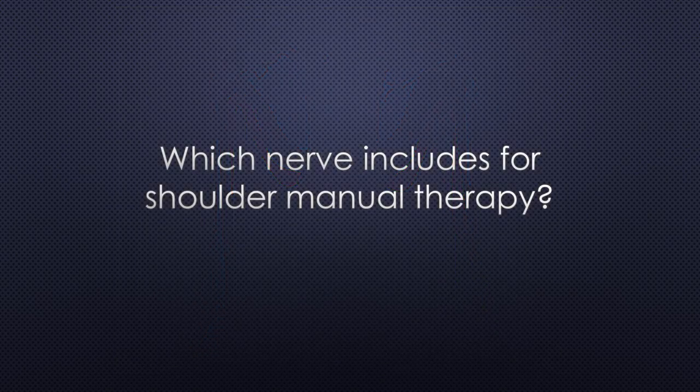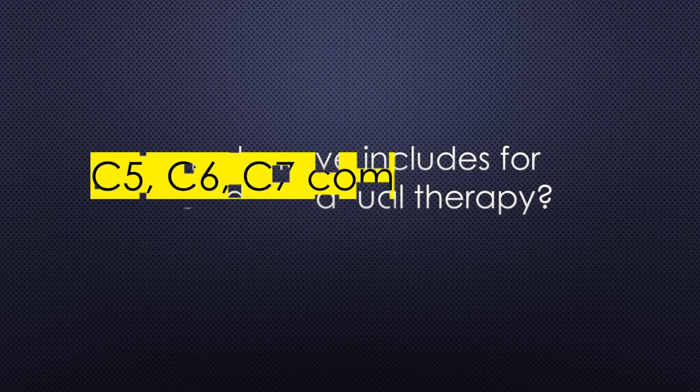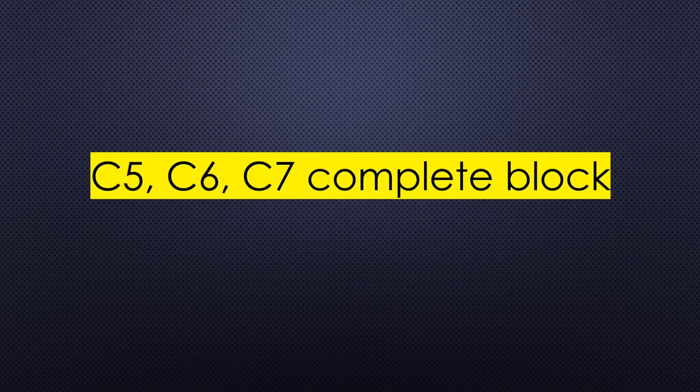Which level of cervical nerves is needed to anesthetize the upper extremity for shoulder manual therapy? My answer is C5, C6, C7 — complete block.